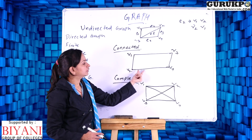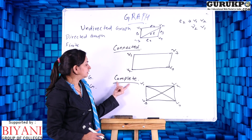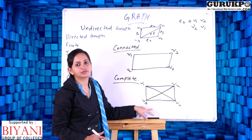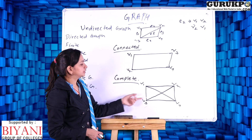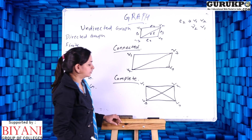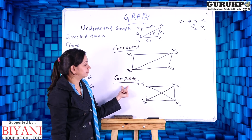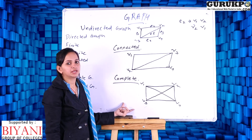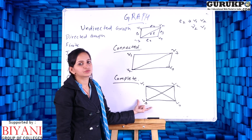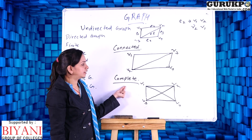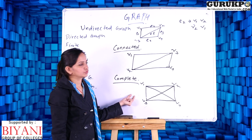In a connected graph the only condition is that there is no isolated vertex, but in a complete graph every vertex must connect to each other vertex separately. This is the difference between connected and complete graph. Every complete graph is a connected graph because it satisfies the condition of having no isolated vertices — but a connected graph is not always a complete graph. So every complete graph is a connected graph, but vice versa is not always true.